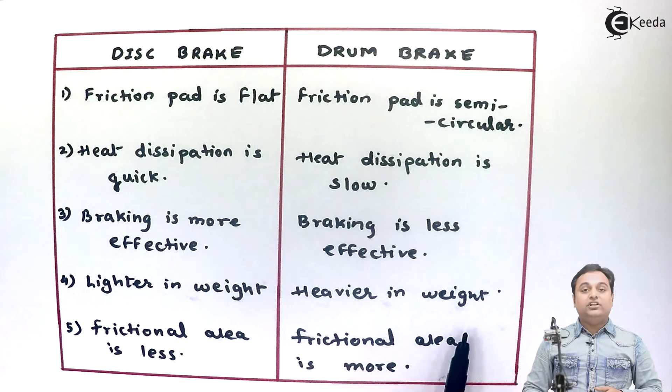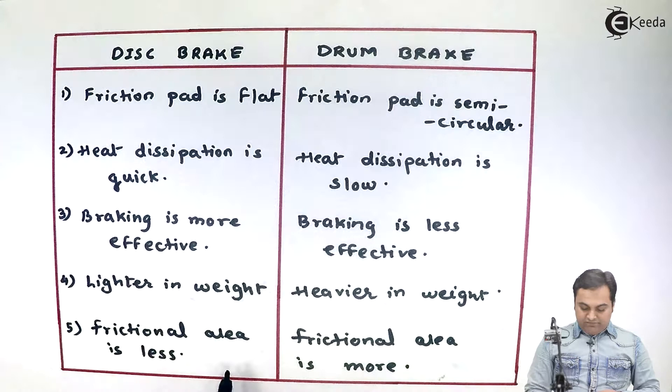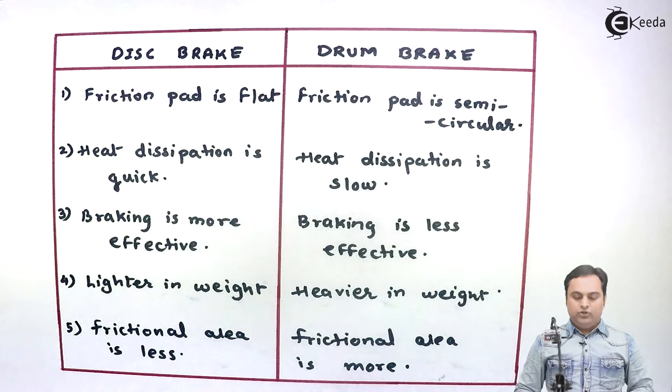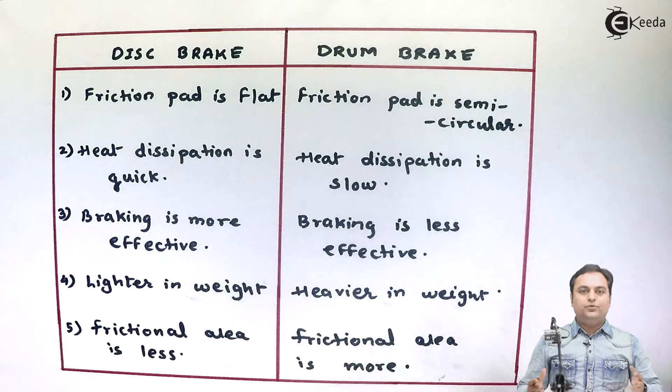Having more number of parts, in case of disc brake the frictional area is less, whereas in case of drum brake the frictional area is more. These were some distinguishing factors for disc brake and drum brake.